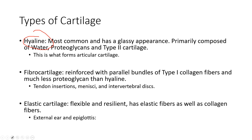Fibrocartilage has much less proteoglycan and much less water content than hyaline cartilage. It's what we see with tendon insertions, the menisci — though the menisci and cartilage are actually two very different things — and the intervertebral disc. And then there's elastic cartilage, which is flexible and resilient — you see that in the external ear or the epiglottis.